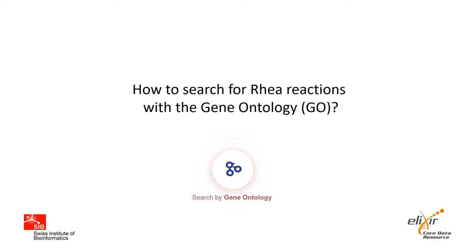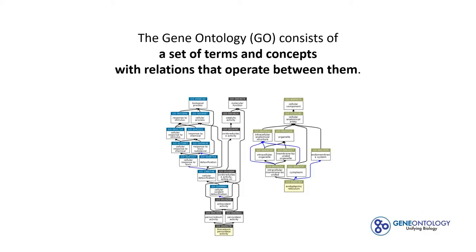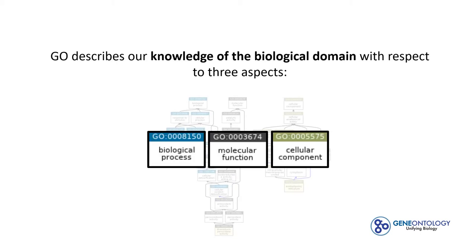In this tutorial, we will learn how to search for RIA reactions with the gene ontology. The gene ontology, or GO, consists of a set of terms and concepts with relations that operate between them. GO attempts to describe our knowledge of the biological domain with respect to three aspects: biological process, molecular function, and cellular component.